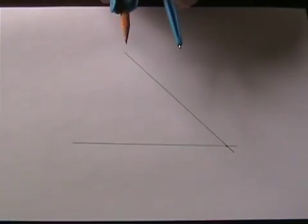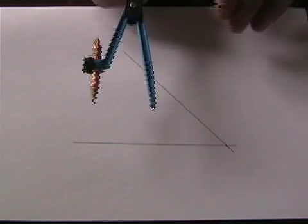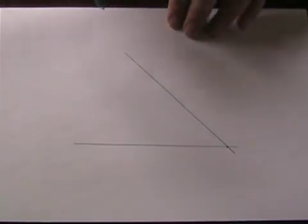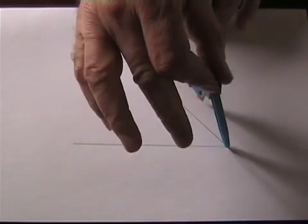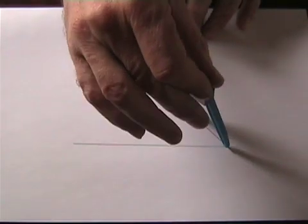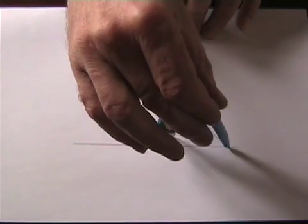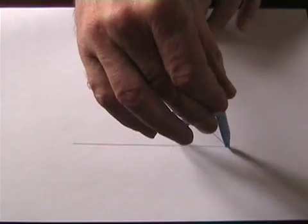Open the compasses again to any size you like, too large makes them a bit unwieldy, too small is too difficult. Put the point on the intersection of the lines and swing arcs to cut both lines of the angle.